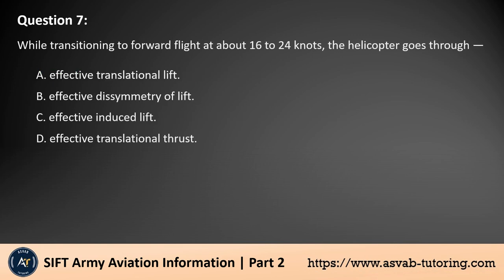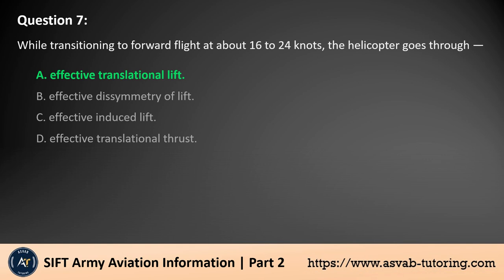Question 7. While transitioning to forward flight at about 16–24 knots, the helicopter goes through: A. Effective translational lift. B. Effective dissymmetry of lift. C. Effective induced lift. D. Effective translational thrust. The answer is A. While transitioning to forward flight at about 16–24 knots, the helicopter experiences effective translational lift (ETL). ETL occurs when the helicopter moves into undisturbed air, allowing the rotor system to produce more lift with less induced drag. The other terms — dissymmetry of lift, induced lift, and translational thrust — describe different aerodynamic phenomena.